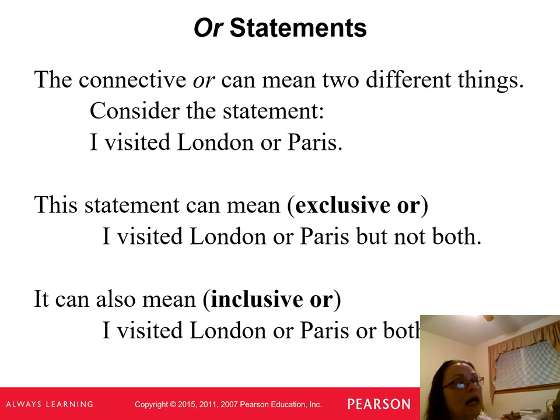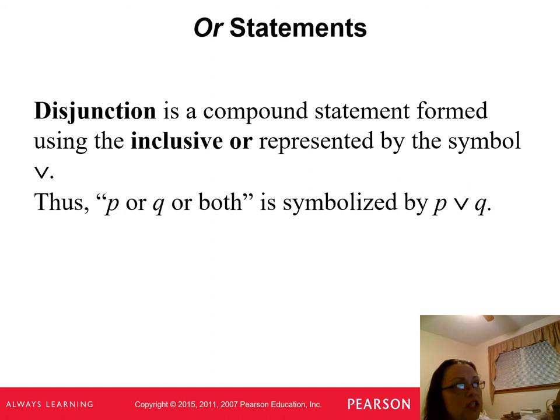The statement 'or' is like 'I visited London or Paris.' That can mean you went to London but not Paris, you went to Paris but not London, or you went to both. So 'or' can mean either-or or both. That is called a disjunction, or the inclusive or, and the symbol is a right-side-up V. P or Q or both is symbolized by P ∨ Q. Look at your symbols — you need to know these so you understand what the homework is asking.